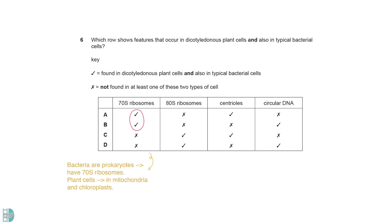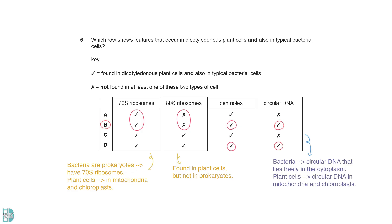Bacteria are prokaryotes. They have 70S ribosomes. Plant cells have them too, in the mitochondria and the chloroplast. 80S ribosomes are found in plant cells, but not in prokaryotes. Neither of them contains centrioles. Bacteria have circular DNA that lies freely in the cytoplasm. Plant cells have circular DNA in their mitochondria and chloroplast.